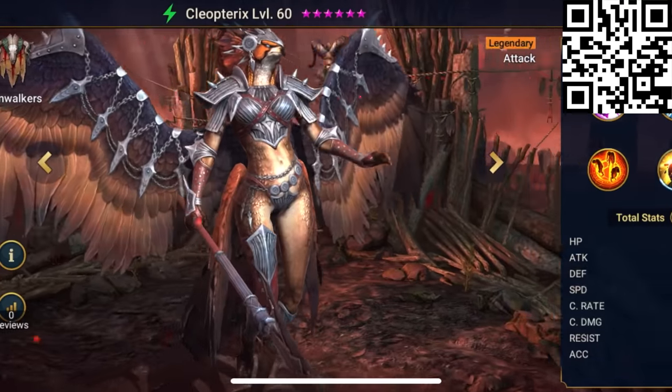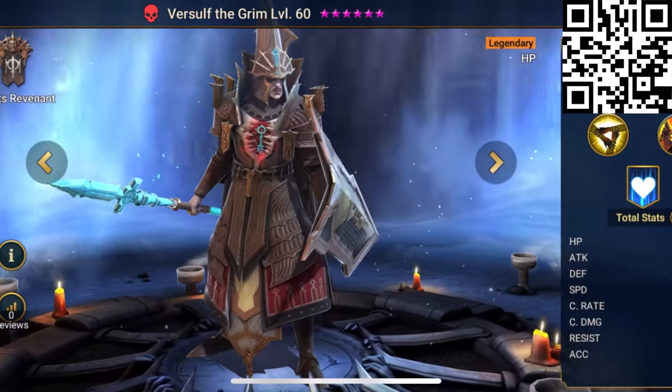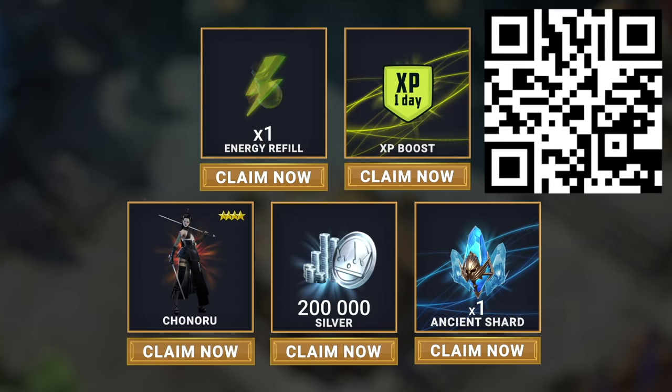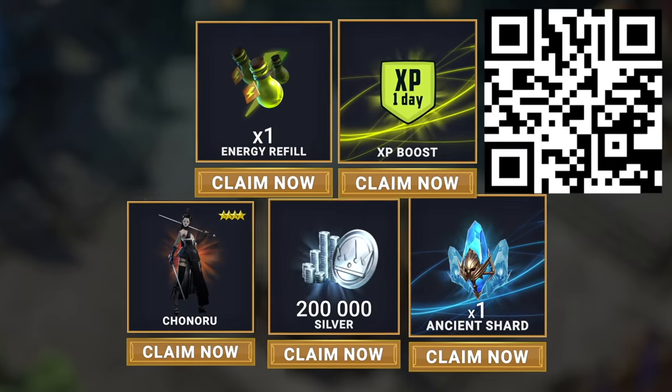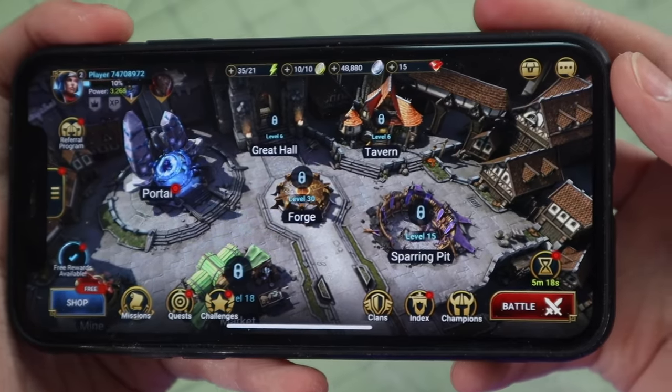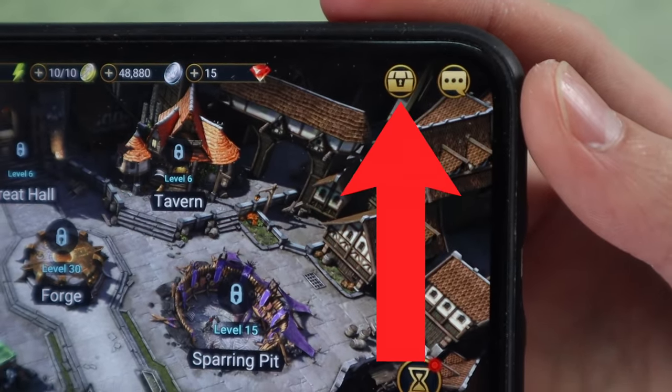Ninja is available right now for free, but this limited edition champion is only available until October 15th. If that's not enough, Raid has just released five other brand new champions and they've got a bunch of summer events and activities happening right now. So hit the link in the description or scan my QR code, and if you're a new player, you'll get 200,000 silver, one XP boost, one energy refill, one ancient shard, and an epic hero Chinoru. All this treasure will be waiting for you right here for the next 30 days only.